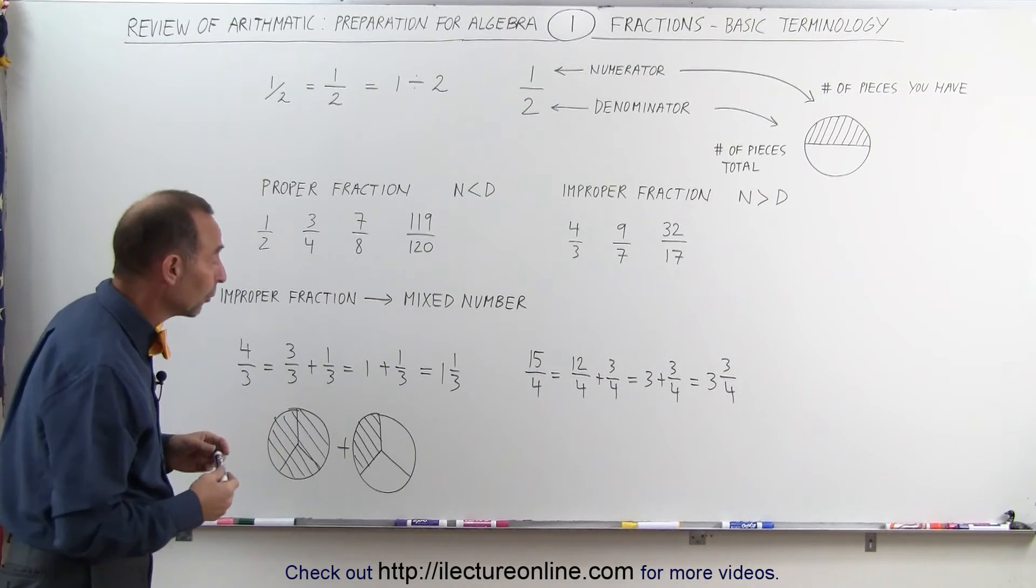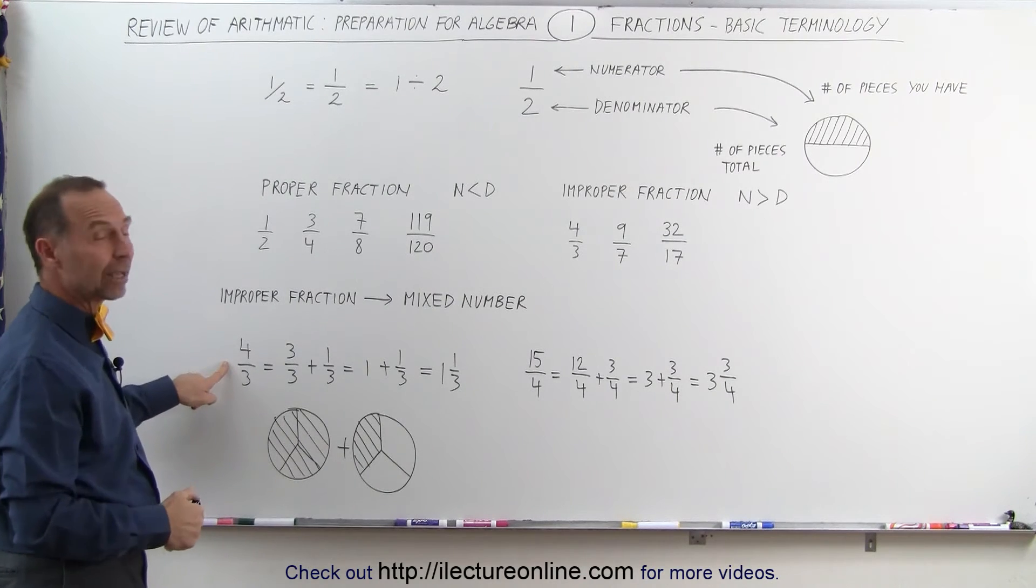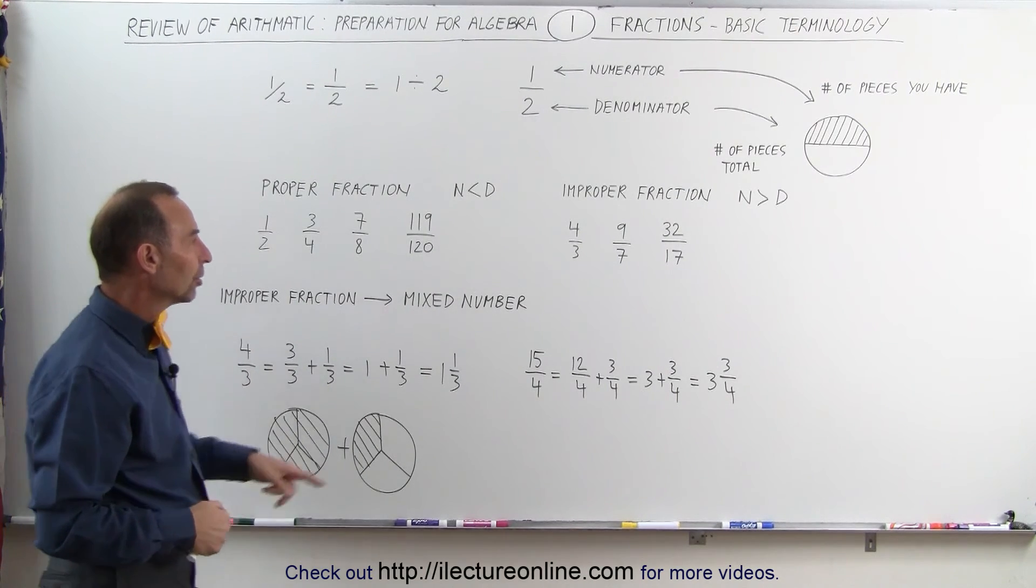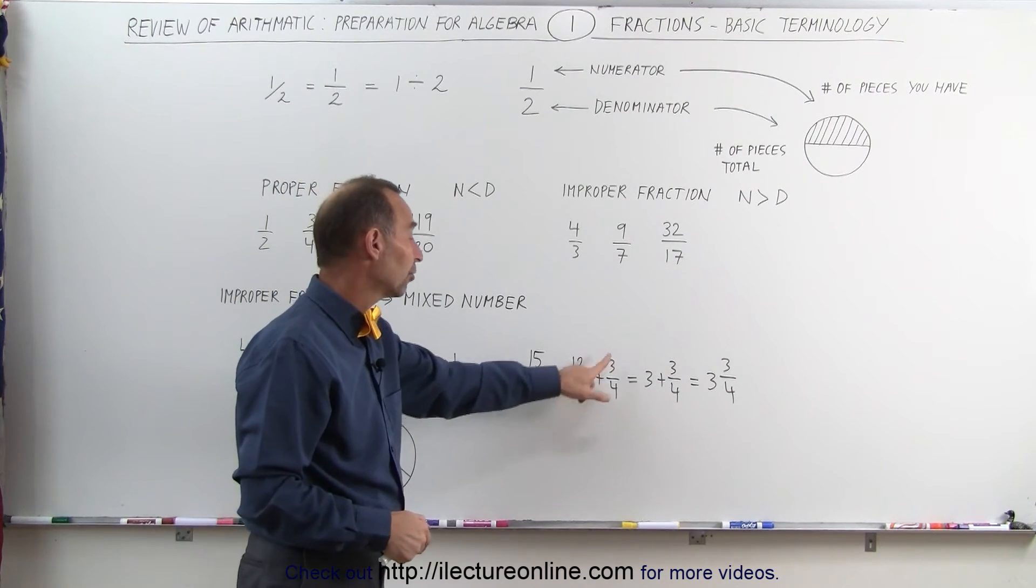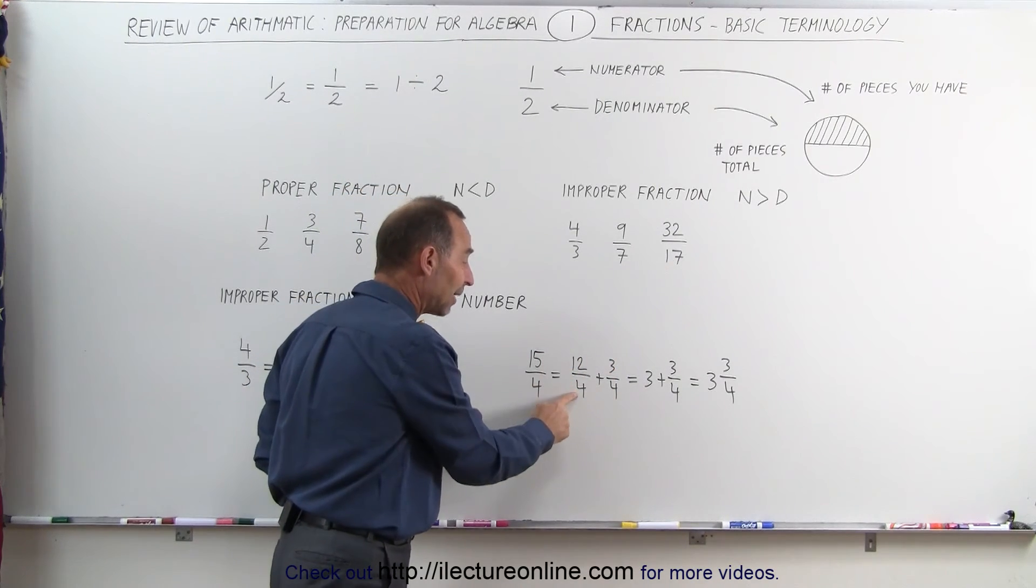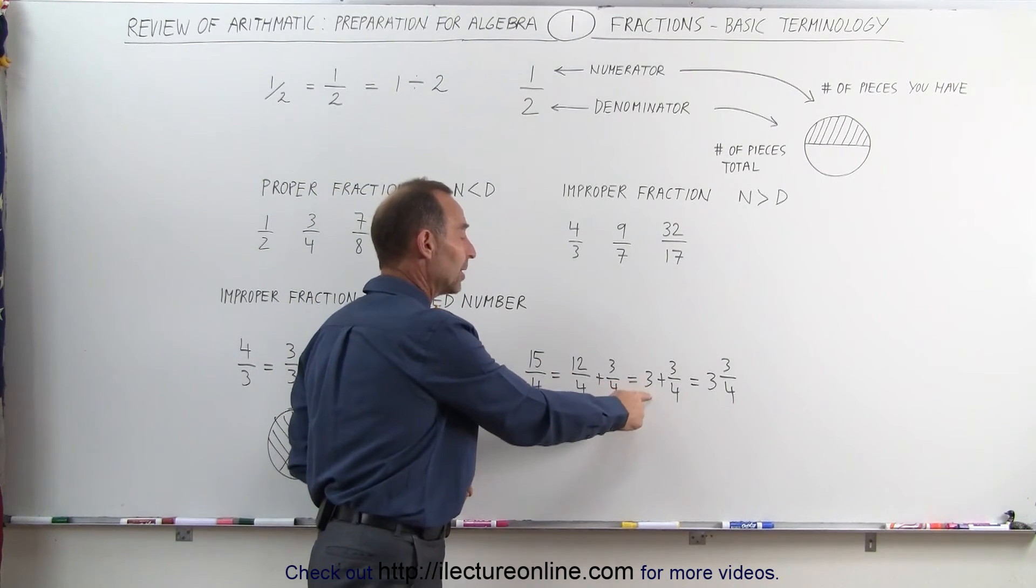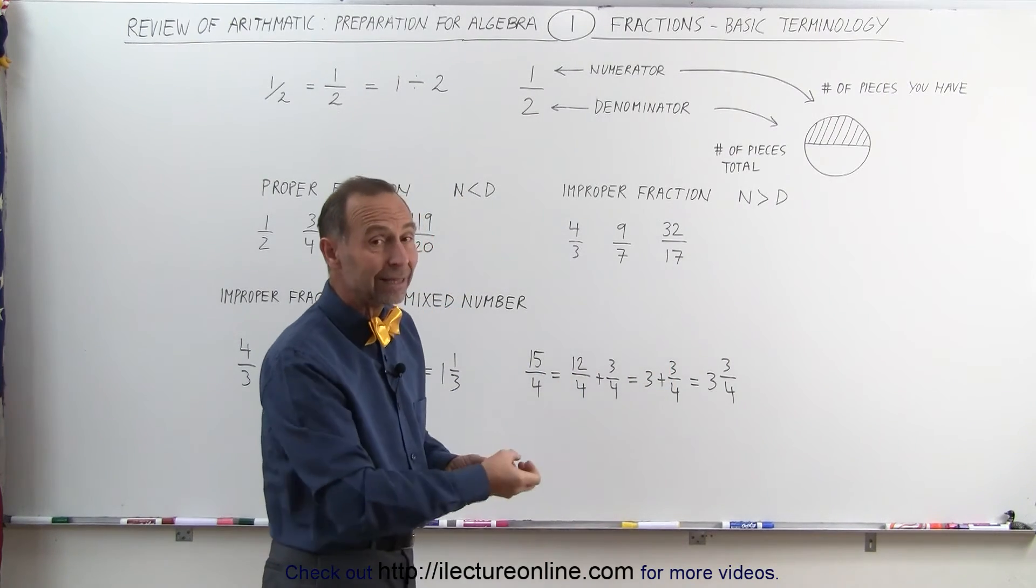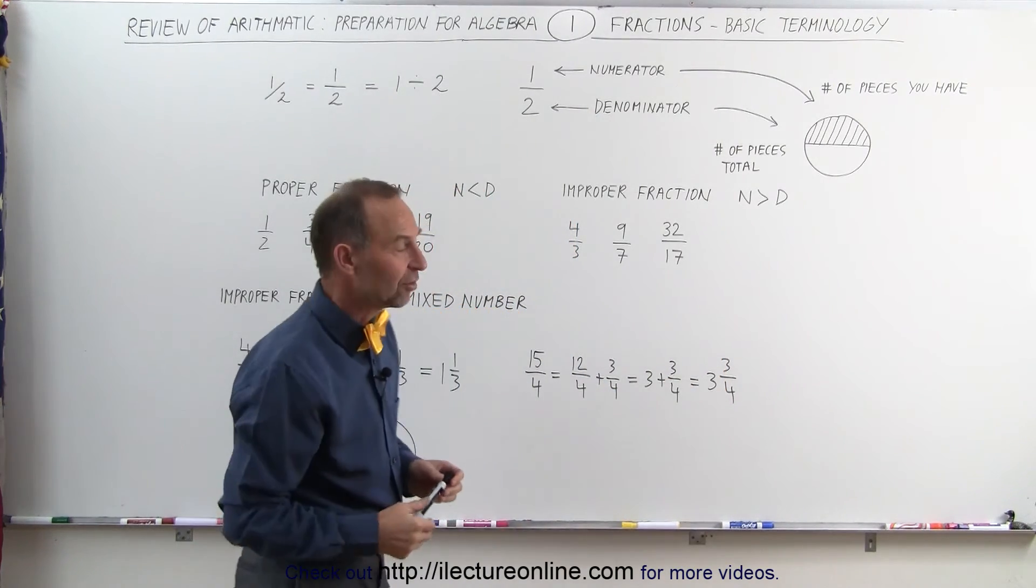We get rid of the plus—the plus is really still there, but we simply don't write it. So this is called a mixed number, and it's exactly the same as this improper fraction. Same with the number 15 divided by 4, or 15 fourths. You can write it as 12 fourths plus 3 fourths. Again, 12 plus 3 is 15, but notice that 12 can be divided by 4 evenly. 4 goes into 12 exactly 3 times, so this can be written as 3 plus 3 fourths. And again, we can take the plus away and simply write it as a mixed number: 3 and 3 fourths.